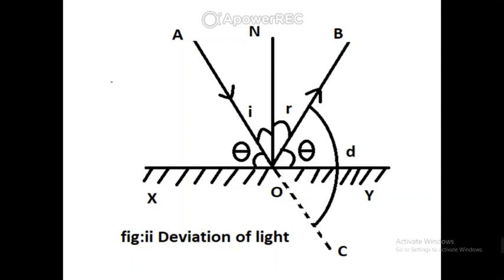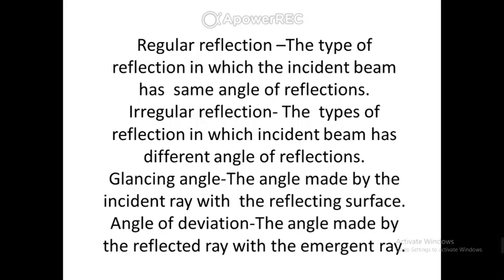The angle of deviation is the angle between the reflected ray and the emergent ray. To summarize: regular reflection means the incident beam has the same angle of reflection; irregular reflection means different angles of reflection. Glancing angle is the angle made by the incident ray with the reflecting surface. Angle of deviation is the angle made by the reflected ray with the emergent ray.